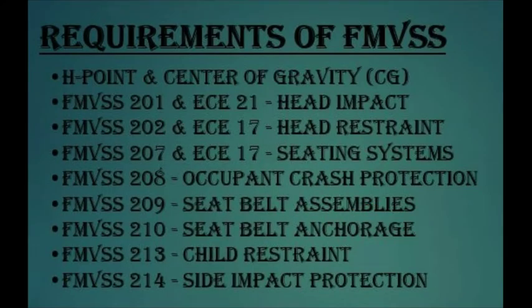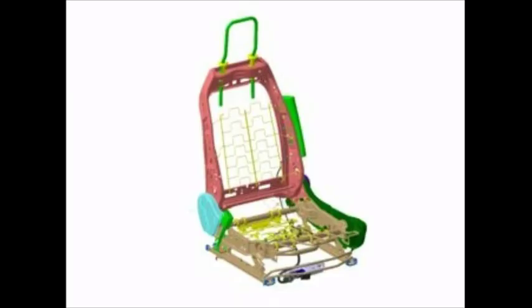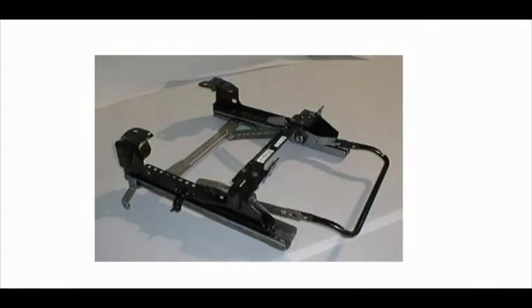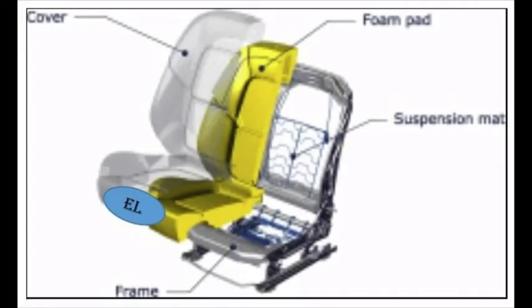Now we are going to see the seating system elements — the seat components. The first is the seat track or adjuster. You can see in the image it is on the below side of the cushion, so that the occupant or operator can adjust the seat in the forward and rearward direction. The second is the recliner.